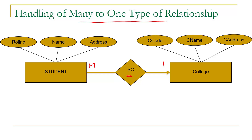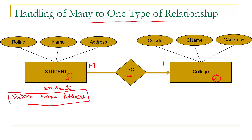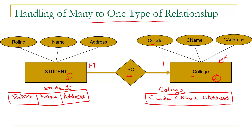To convert this ER diagram to tables, we know that we have to create a table for every entity set. So we need to create a table for entity set Student and a table for entity set College. The Student table will have three columns: row number, name, and address. The College table will have three columns: college code, college name, and college address.